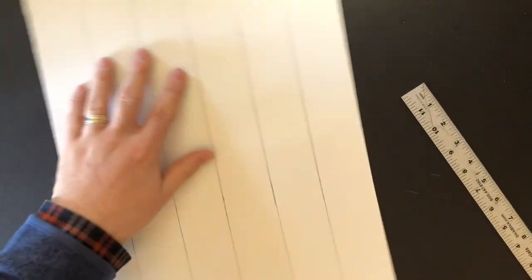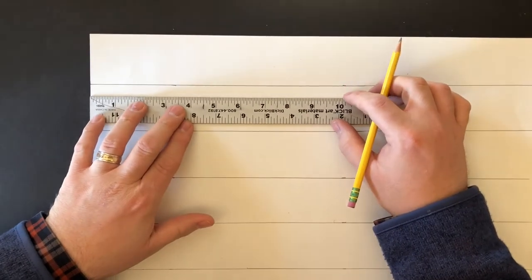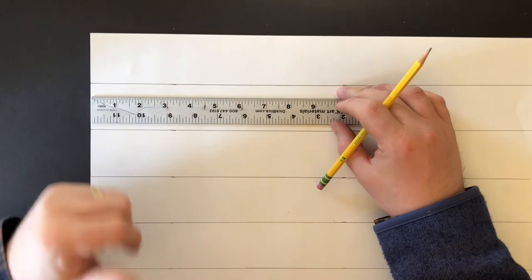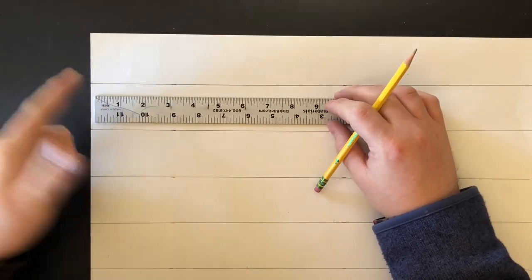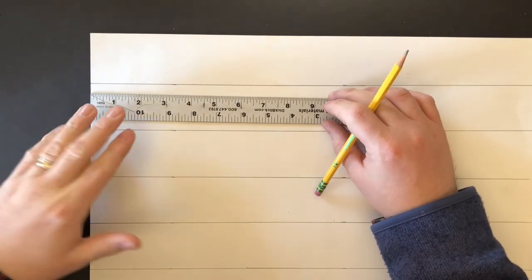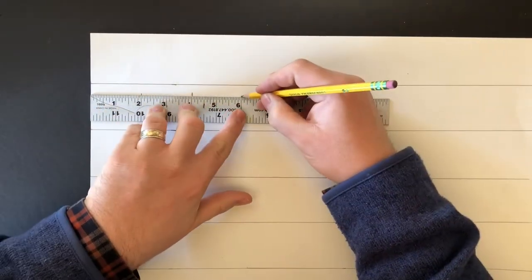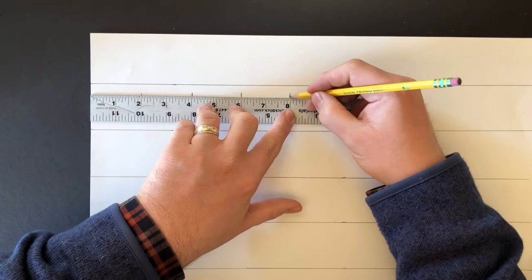Alright, so we have it vertically. Now we're going to go horizontal. Take my ruler, put it on the edge of the paper. Make sure it's on the edge. It needs to be on the edge of the paper. Same numbers we have: two, four, six, eight.